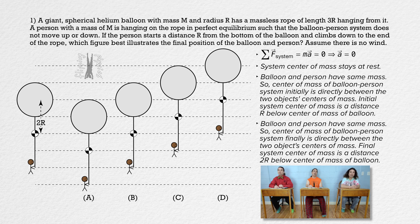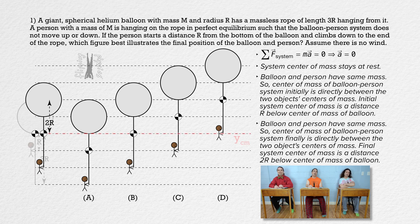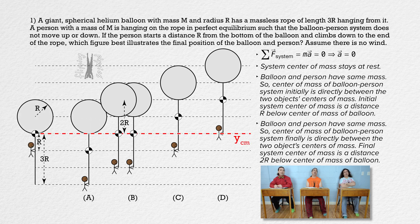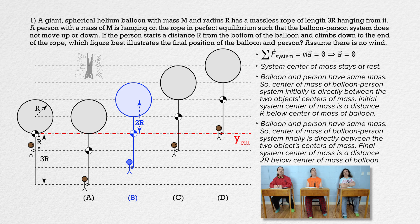However, the center of mass of the balloon-person system always stays in the same place relative to the earth. Therefore, the correct answer choice is B. The rope has no mass, so the rope does not affect where the center of mass of the balloon-person system is.